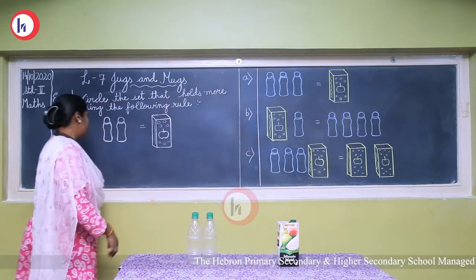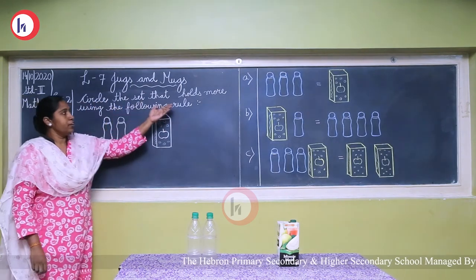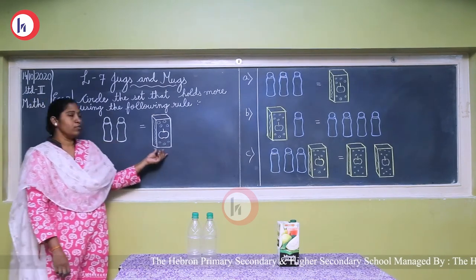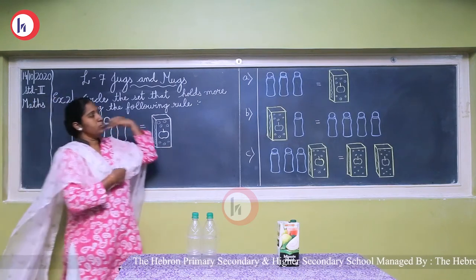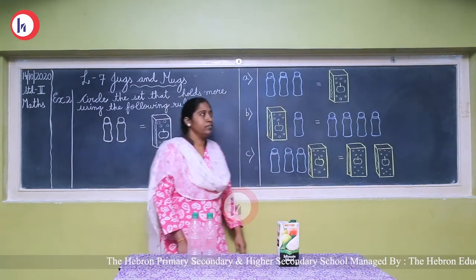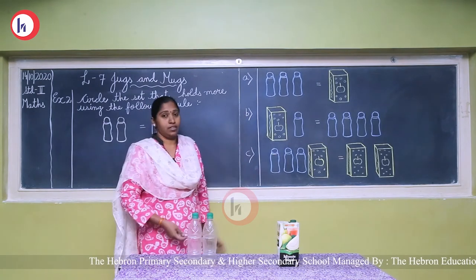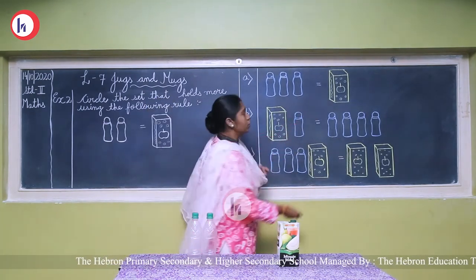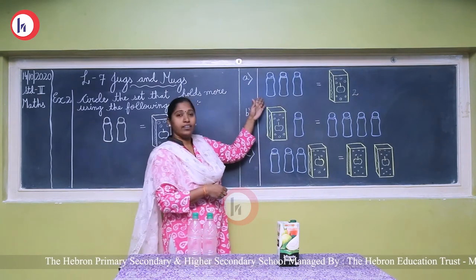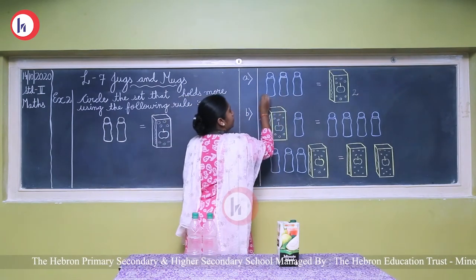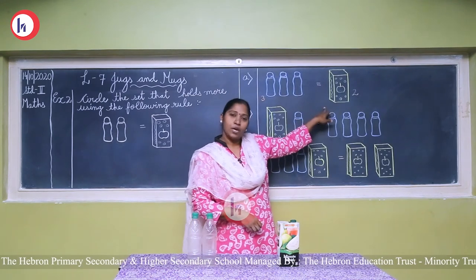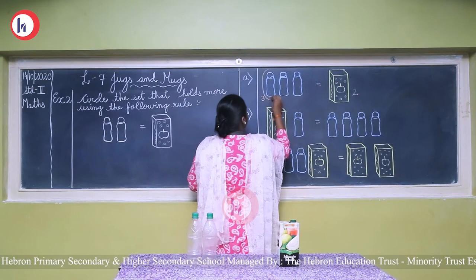Now the exercise: circle the set that holds the most. I have shown you practically that two bottles equal one tetra pack. In the first question we have three bottles on one side and one pack on the other side. This pack holds two bottles' worth. Here we have three bottles — one, two, three — so three bottles are more than this pack, so we circle the three bottles side.